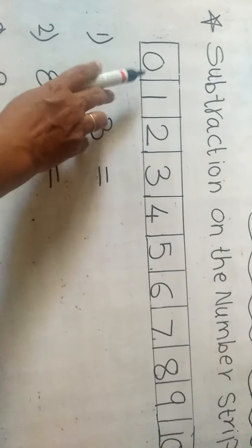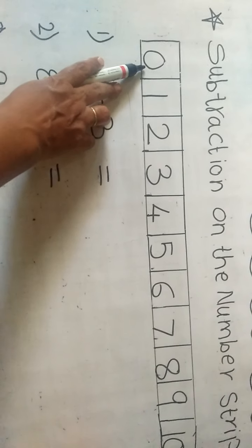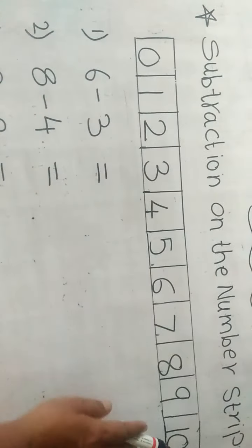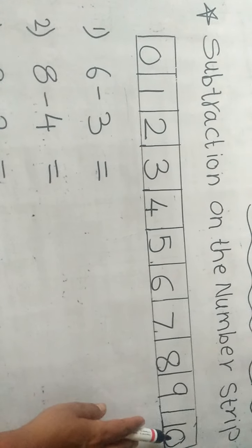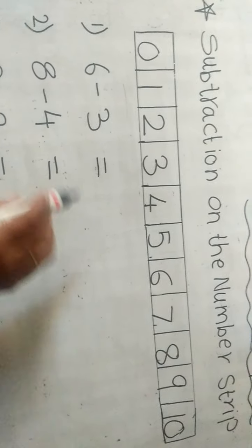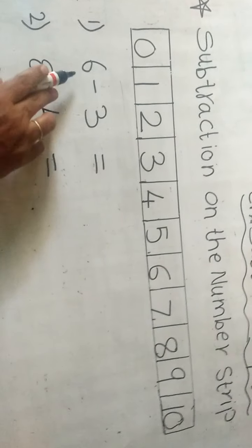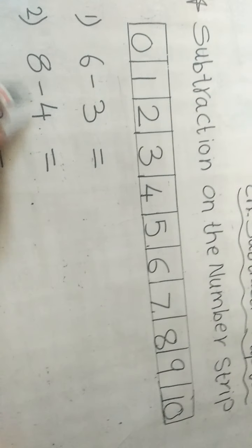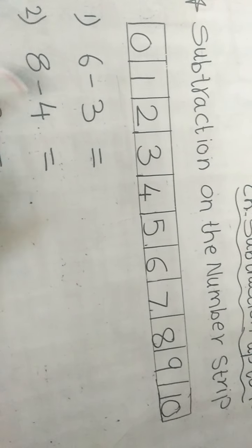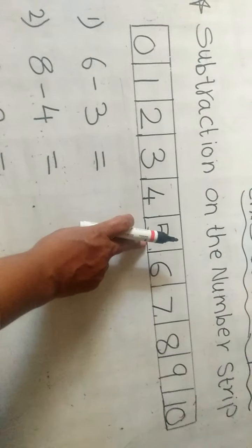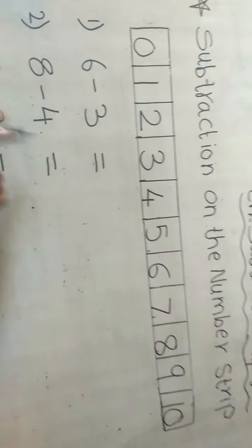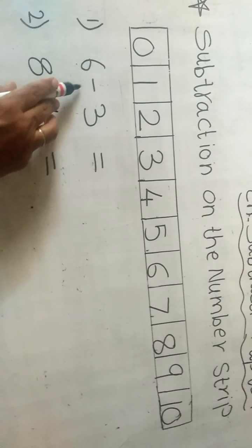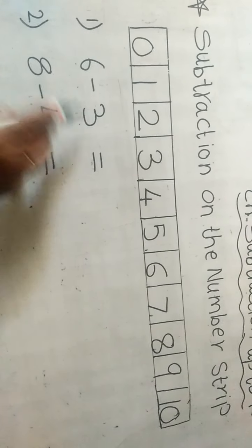Here is a number strip and I wrote here numbers 0 to 10. Now here are some examples and we have to solve these examples with the help of the number strip. Here is number 6 minus 3.